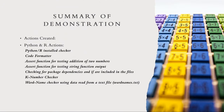Moving on, we'll summarize everything. We created multiple actions for Python and R. We have a Python and R install checker, a code formatter for both Python and R that automatically formats code to the latest guidelines, an assert function for testing the addition of two numbers in Python, an assert function for testing a string function output in R, a check for package dependencies and included files in both Python and R, a K-number checker, and a word name checker that reads data from a text file in the repo — done in Python.